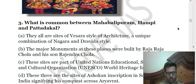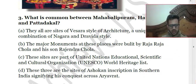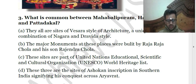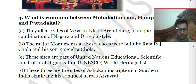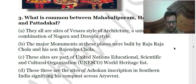Third question: what is common between Mahabalipuram, Hampi, and Patadakal? Option A: they are all sites of Vesara style architecture; B: major monuments were built by Raja Raja Chola and his son Rajendra Chola; C: these sites are part of UNESCO World Heritage Sites; D: these three are sites of Ashokan inscriptions in Southern India. The correct answer is C — all of these are UNESCO World Heritage Sites.